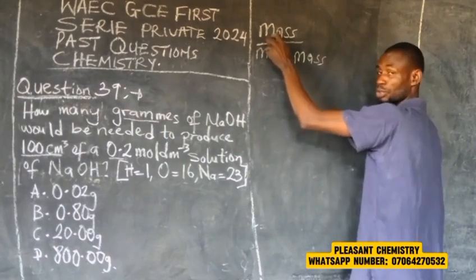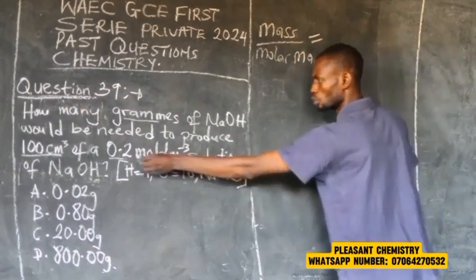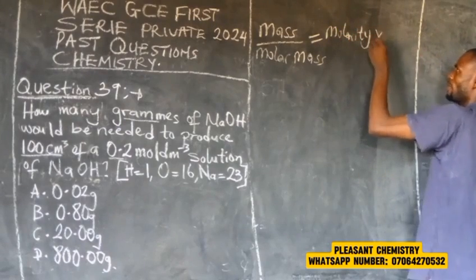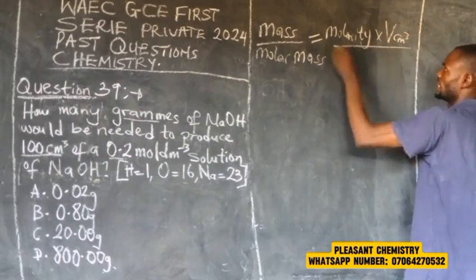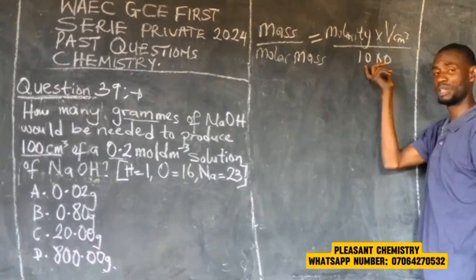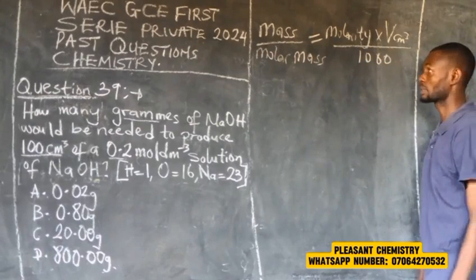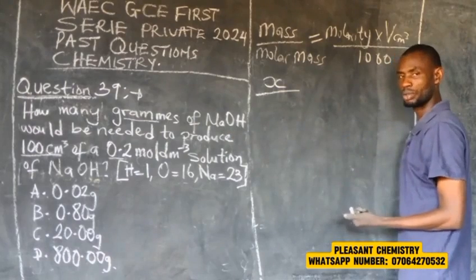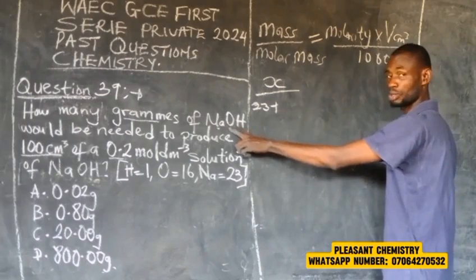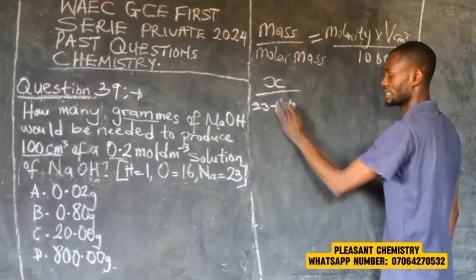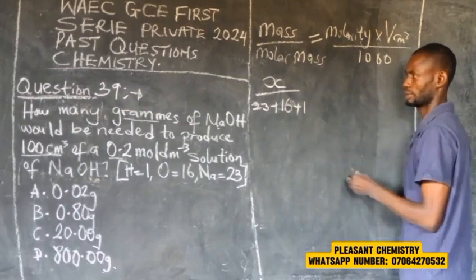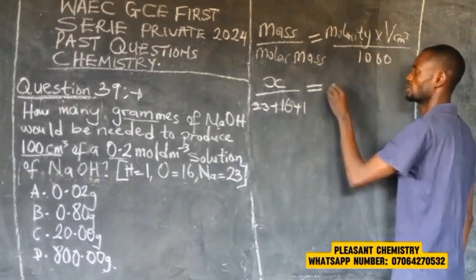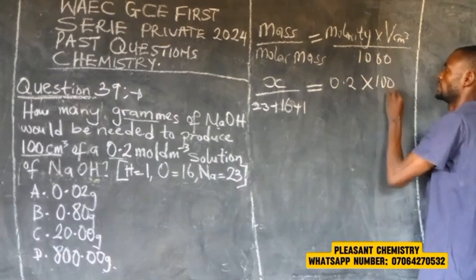The molar mass of sodium hydroxide: sodium = 23, oxygen = 16, hydrogen = 1, giving 40 g/mol. So X divided by 40 equals 0.2 multiplied by 100 divided by 1000. Making X the subject: X times 1000 equals 40 multiplied by 0.2 multiplied by 100.